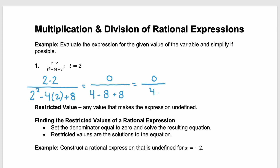Now 0 divided by 4. If you have 0 cookies and you divide those among your 4 friends, everybody gets 0 cookies. Remember, 0 can be divided by 4, but 4 divided by 0 would be undefined. You can't divide by 0.